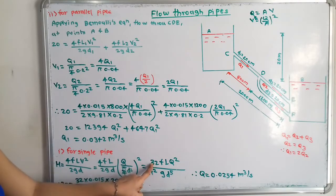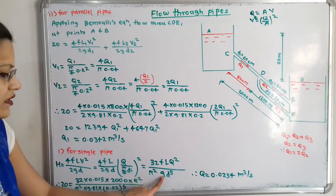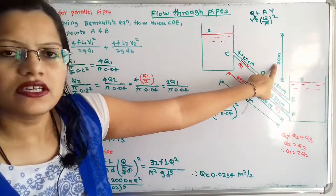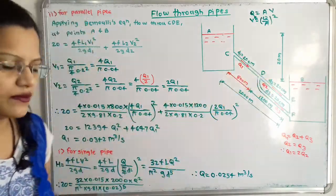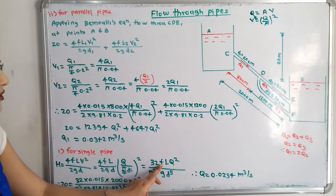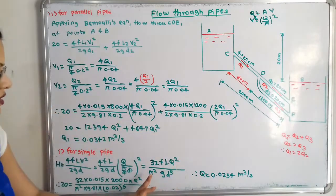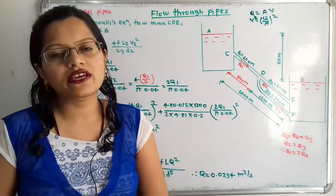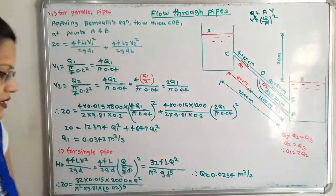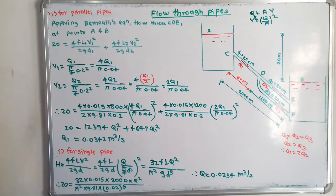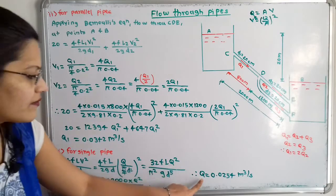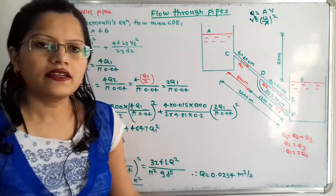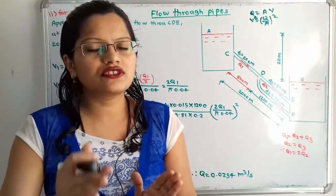Simplifying, we get HF = 32FLQ² / (π²GD⁵). Substituting HF = 20 m, F = 0.015, L = 2000, G = 9.81, D = 0.2 m, and solving for the only unknown Q, we get Q = 0.0254 m³/s. This is the discharge through a single pipe.